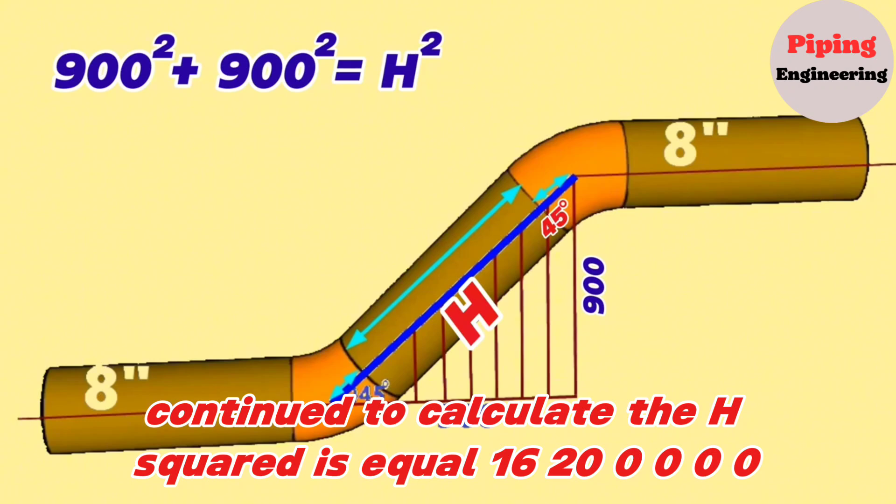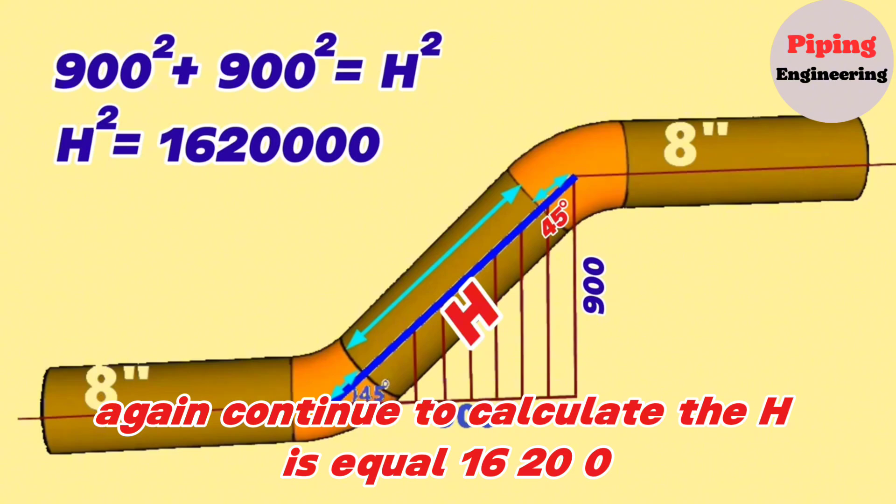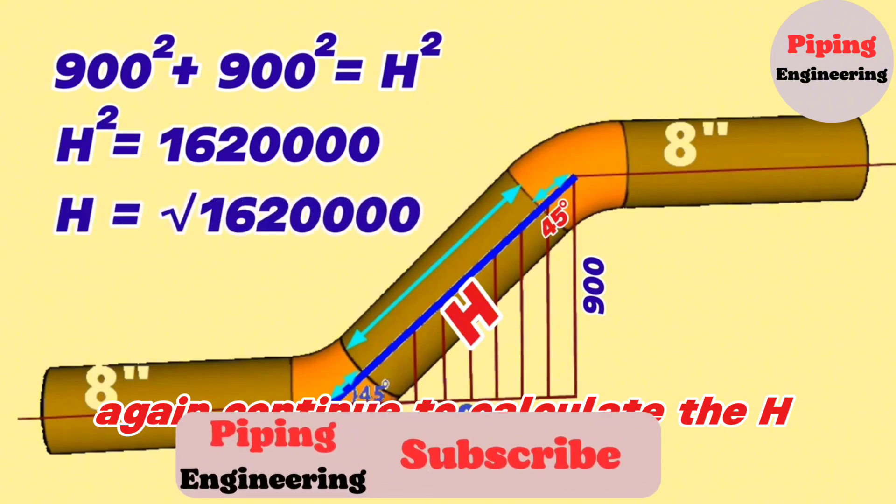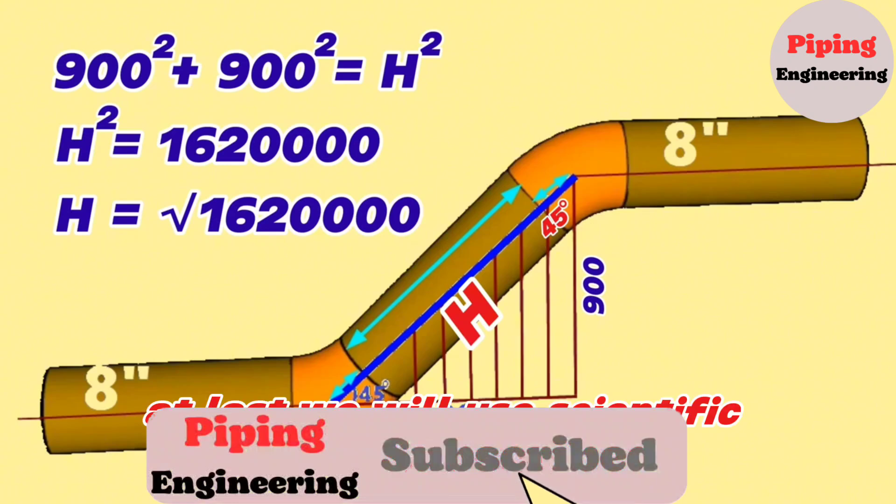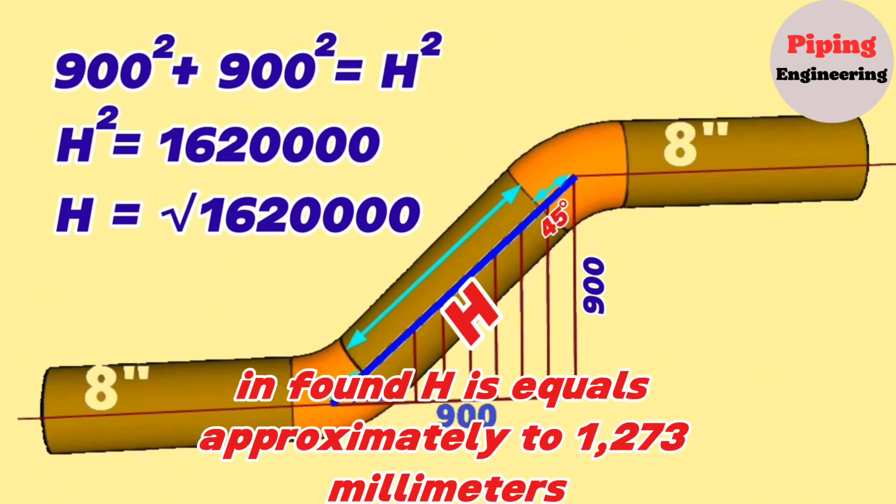Continue to calculate: H squared equals 1,620,000 under the root. At last, we use a scientific calculator and find H equals approximately 1273 millimeters.